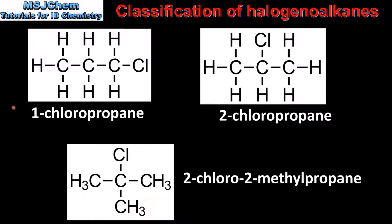Next we look at the classification of the haloalkanes. Here we have three examples of haloalkanes. On the left we have 1-chloropropane, on the right we have 2-chloropropane, and at the bottom we have 2-chloro-2-methylpropane.